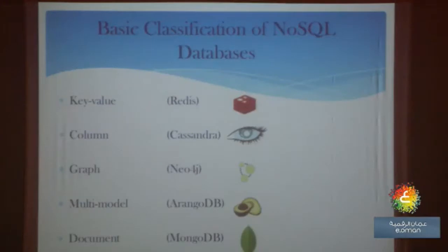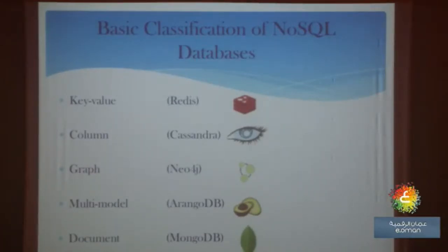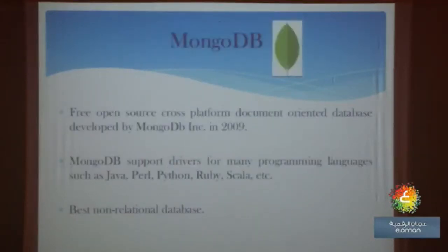Let us see some basic classifications of NoSQL databases. We have key-value databases, column-model databases such as Apache Cassandra, graph-model databases such as Neo4j, multi-model databases such as ArangoDB, and document-model databases such as MongoDB. In this paper, I am comparing the relational model with the document model, using MongoDB as the example.